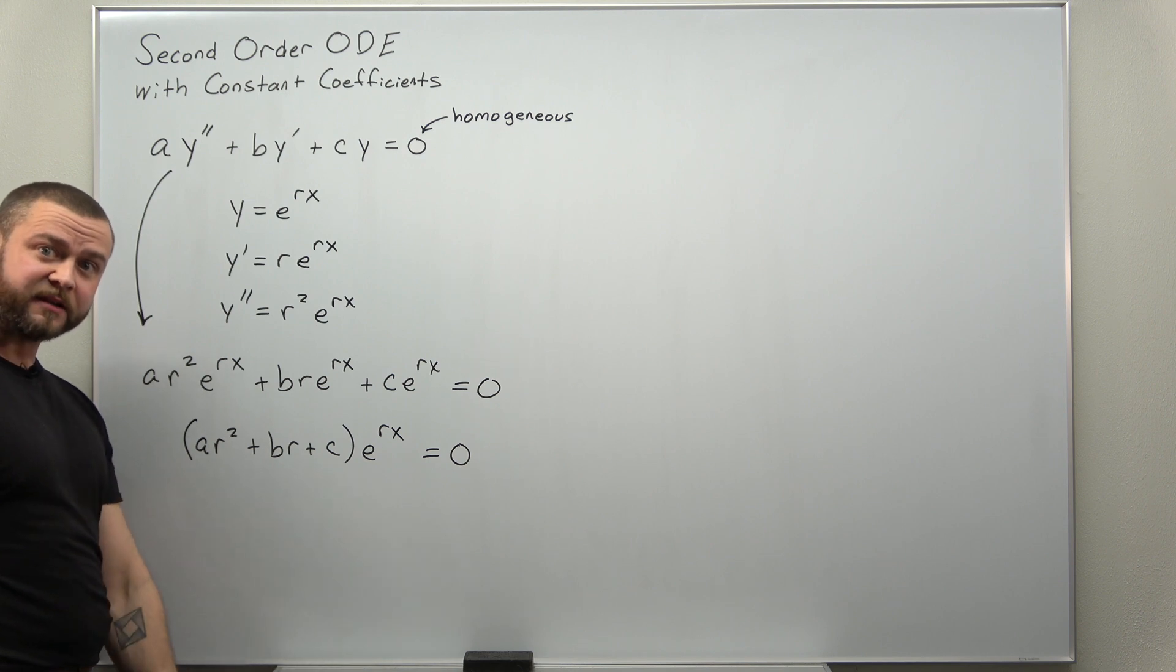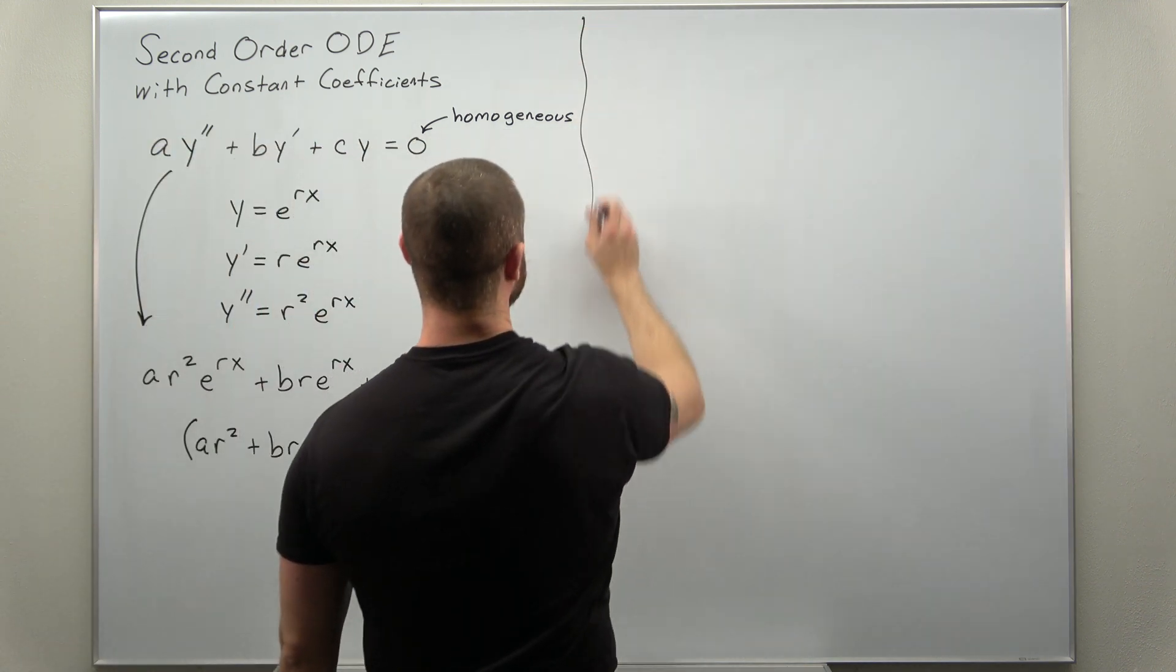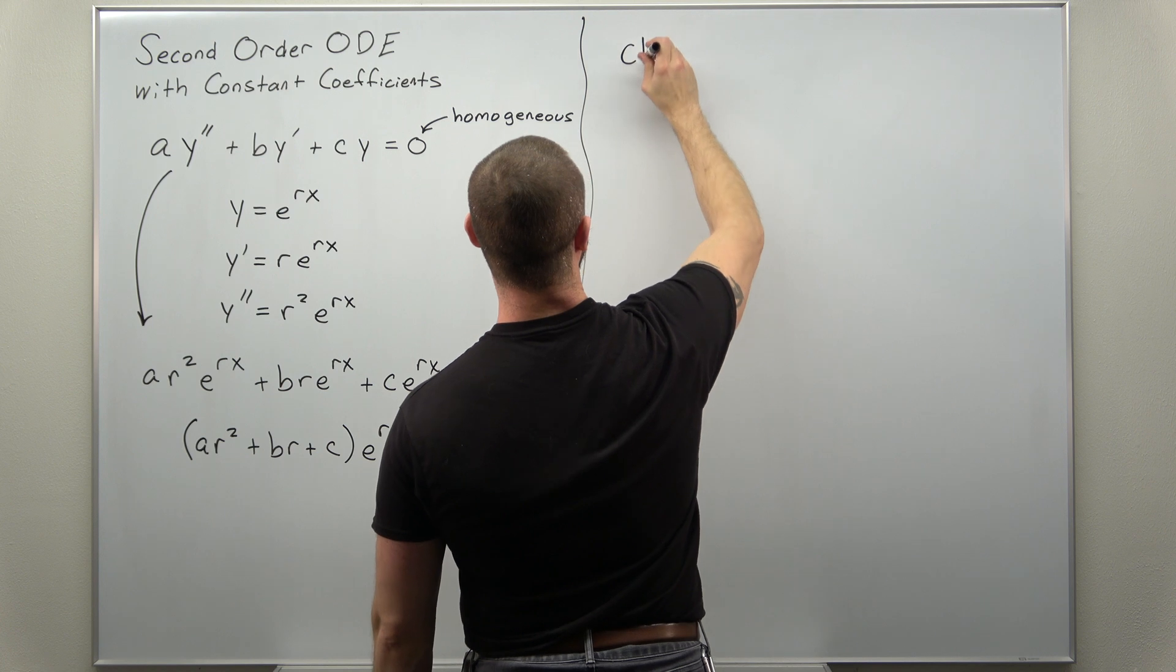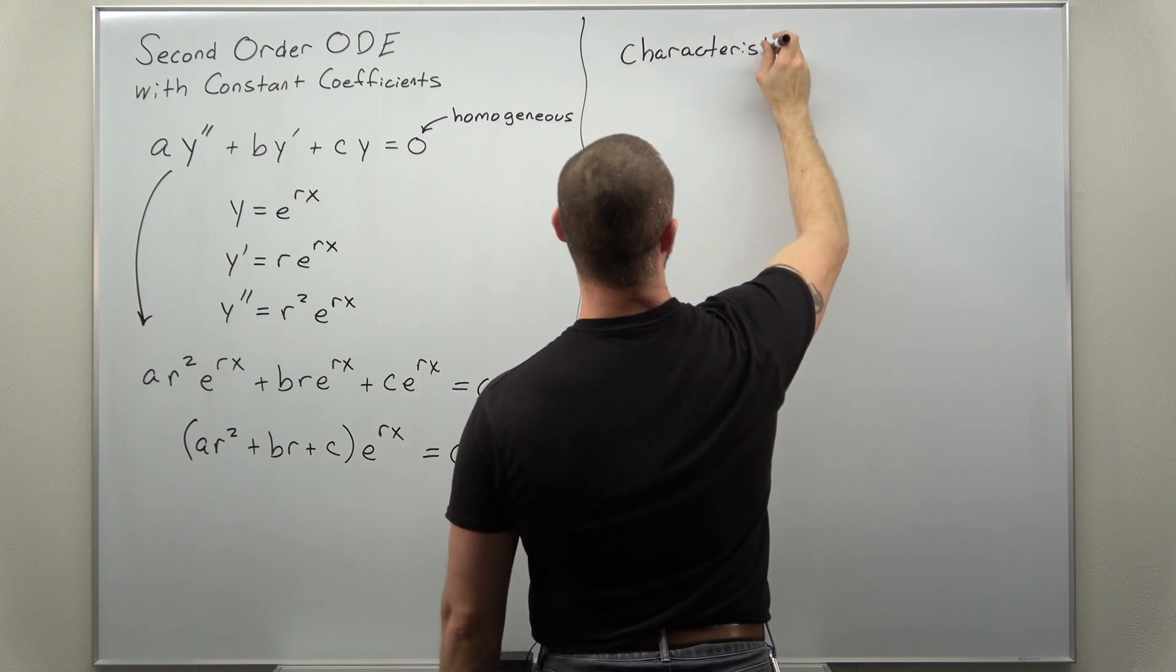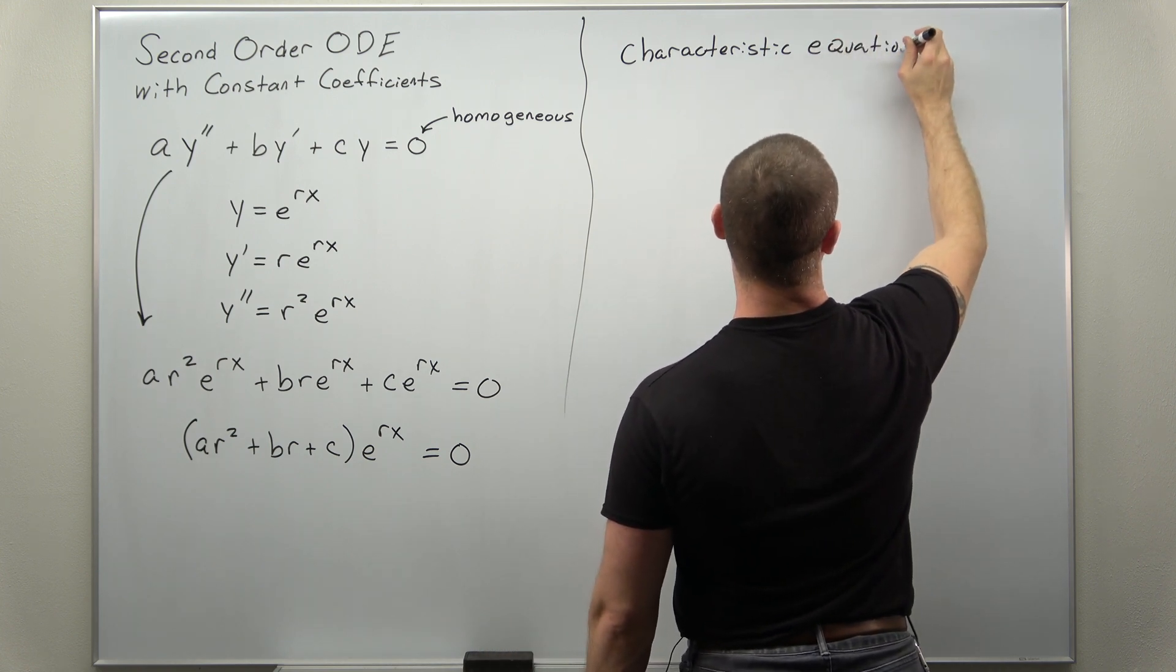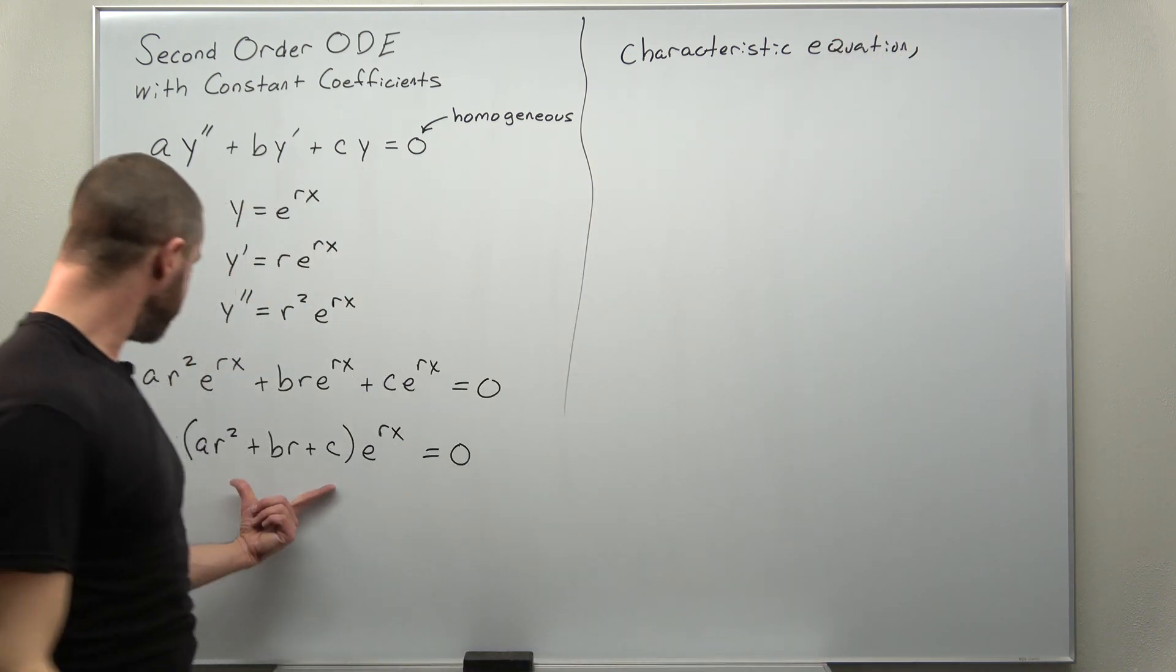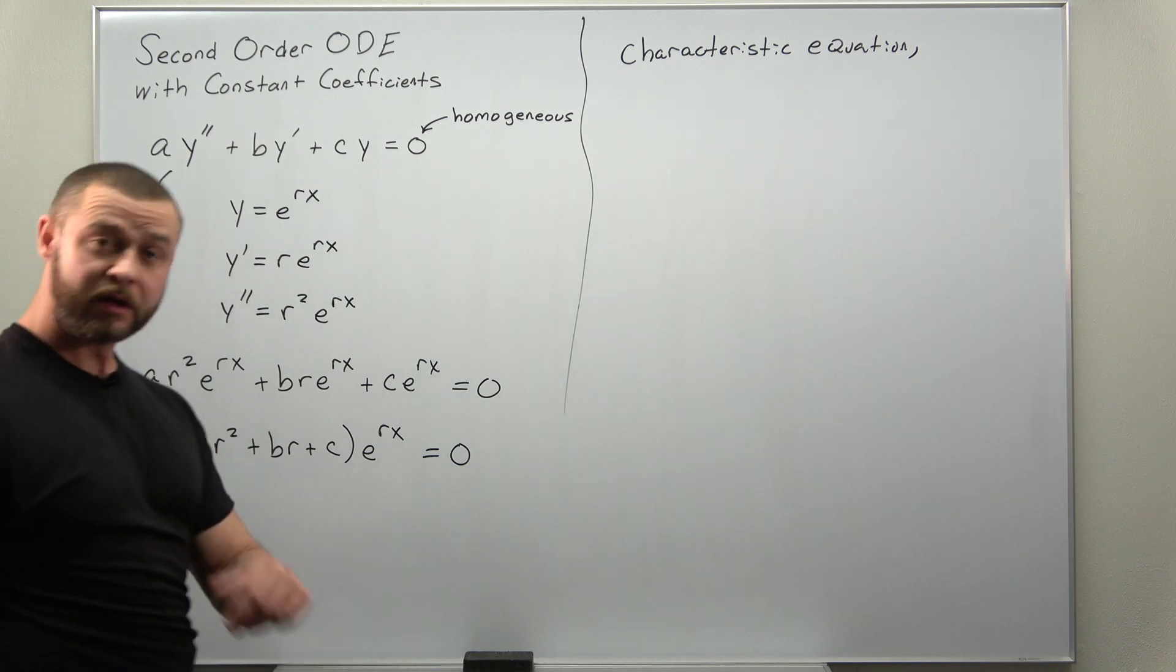And since our goal is to solve for r and we know an exponential function never equals zero, we can divide by it and we'll get what we're calling the characteristic equation which will give us the solutions for r, and that is this part here: ar squared plus br plus c equals zero.